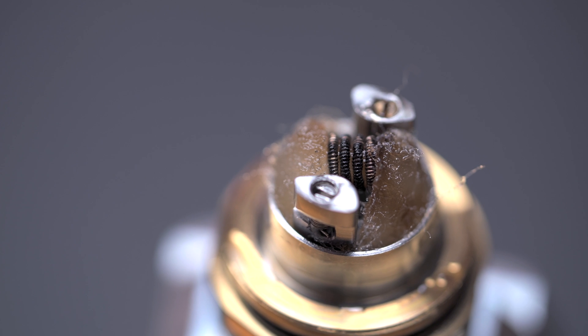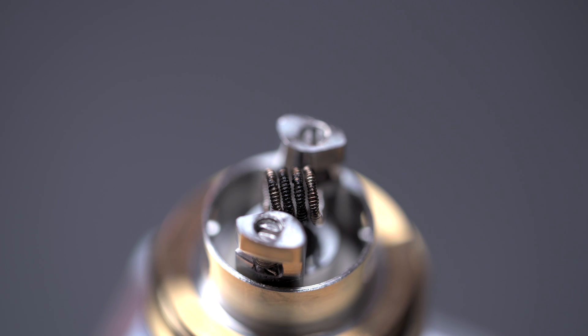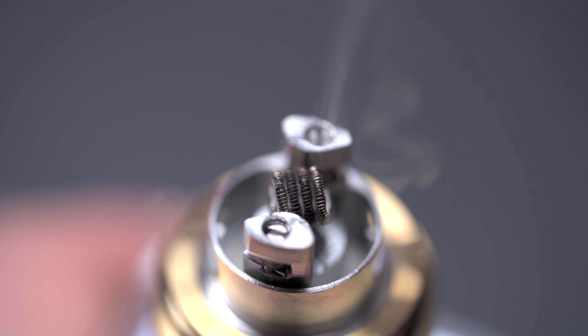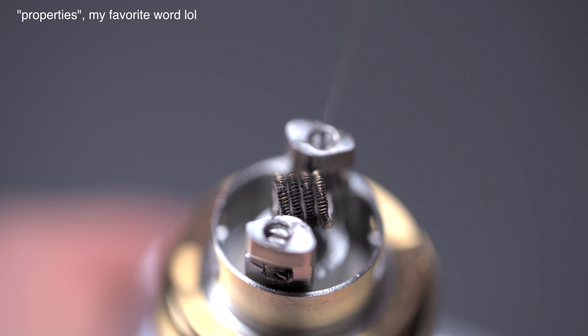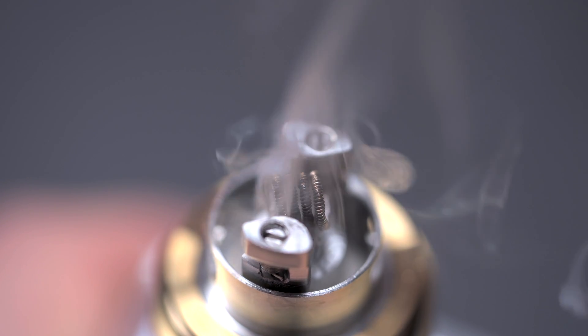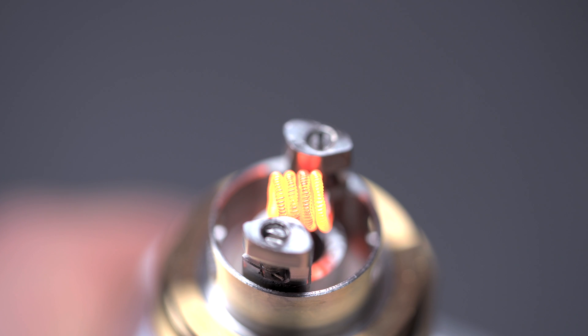Anyway, after removing the old cotton and rinsing a bit of distilled water over the coil it was time to show off the properties I mentioned. This time around I made the coil way hotter.